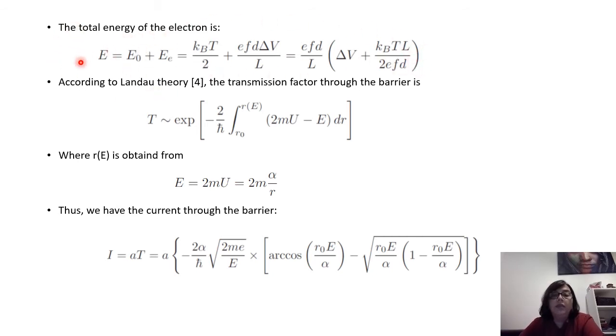So in conclusion, the total energy of the electron can be written as the sum of the previous two energies, the thermal energy and the electric field term. And using the Landau theory for the transmission factor of the electron through the barrier, which is given by this form, where the function of R as function of the energy is given by this equation, we can finally obtain the theoretical expression of the electric intensity through the sample, which is equal to a constant A multiplied by the transmission term given here. And this is the function we obtained. We use this function to fit the recorded data.